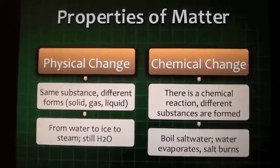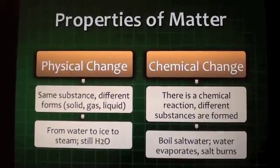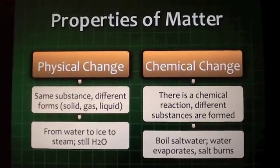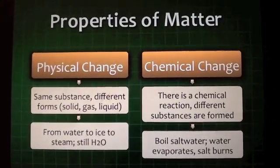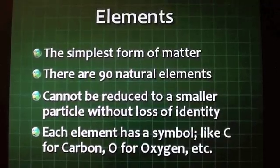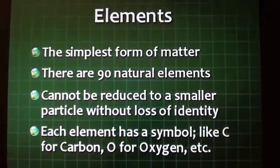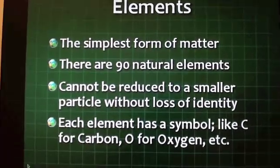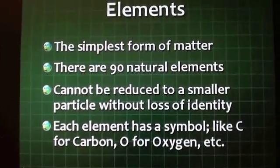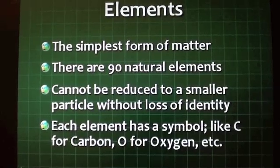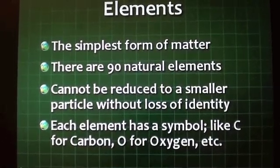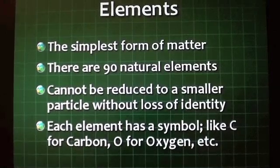In a chemical change, there is a chemical reaction and different substances are formed. For example, when you boil salt water, the water evaporates and the salt remains. Elements are the simplest form of matter. There are 90 natural elements, and they cannot be reduced to a smaller particle without loss of identity. Each element has a symbol, like C for carbon and O for oxygen.